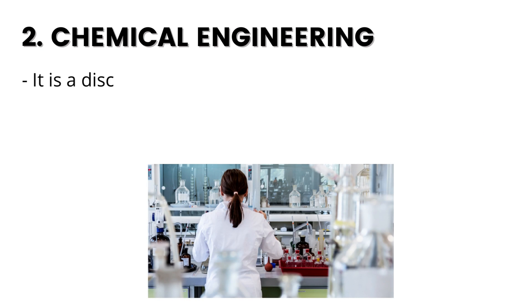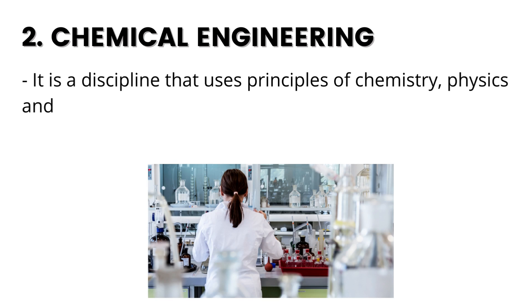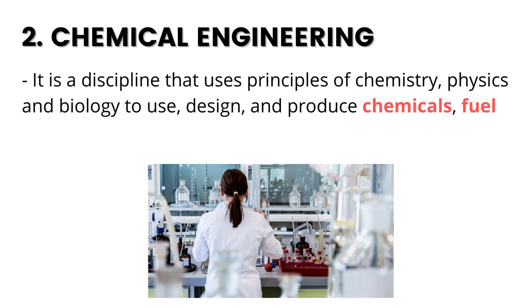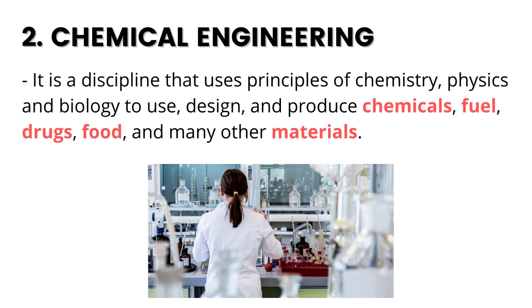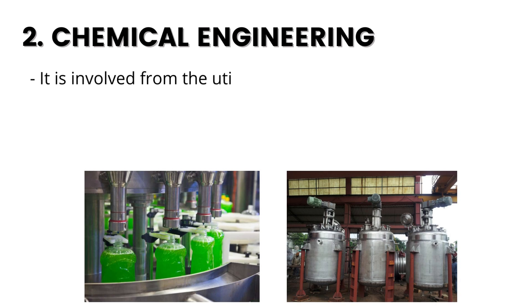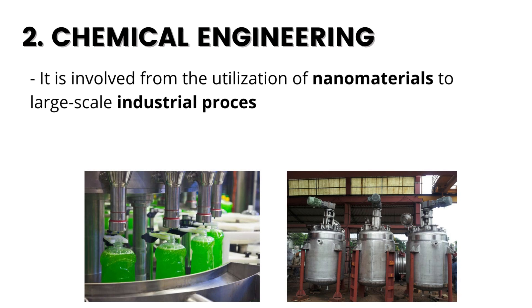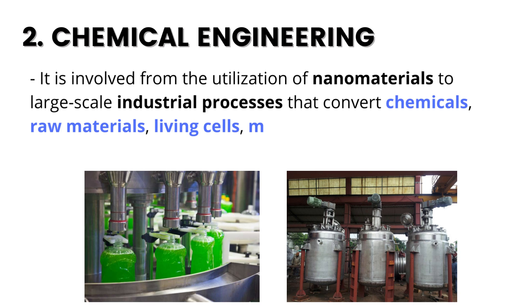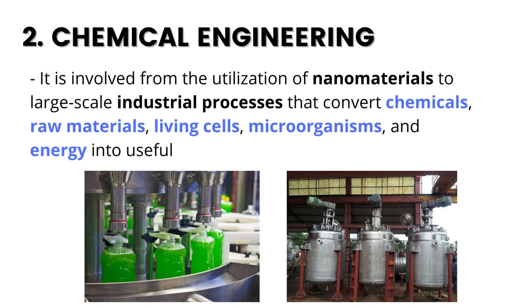2. Chemical Engineering. It is a discipline that uses principles of chemistry, physics and biology to use, design and produce chemicals, fuel, drugs, food and many other materials. It is involved from the utilization of nanomaterials to large-scale industrial processes that convert chemicals, raw materials, living cells, microorganisms and energy into useful forms.